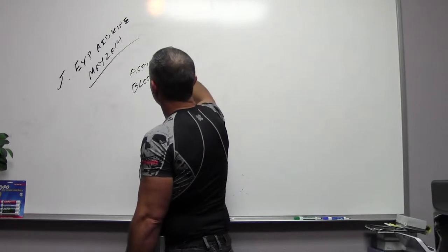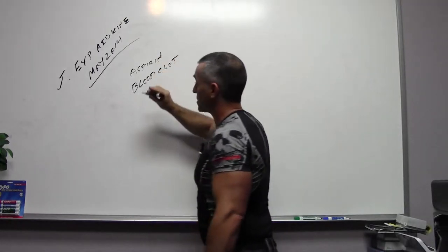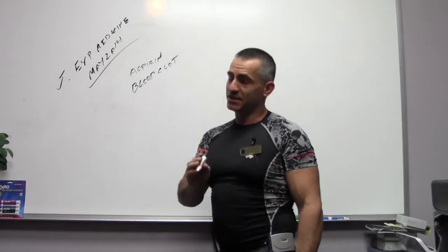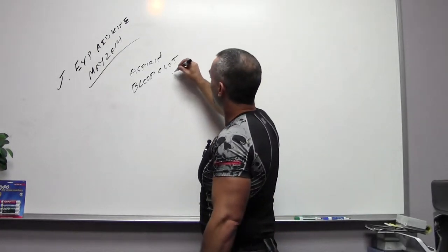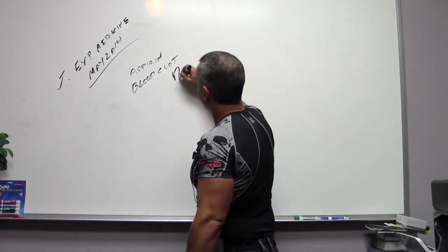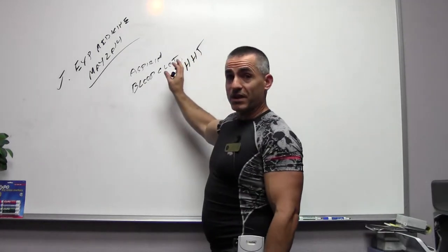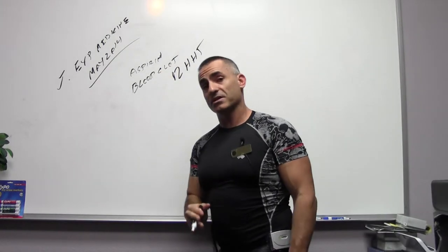The exact same thing that causes aspirin to prevent blood clots is the reduction of, not an enzyme, but a substance called 12-HHT. Now this is how it works.